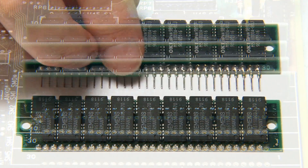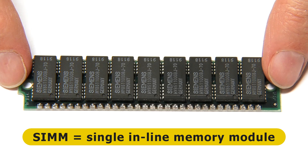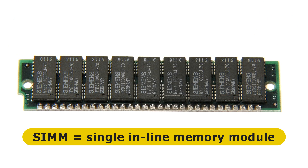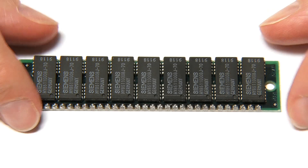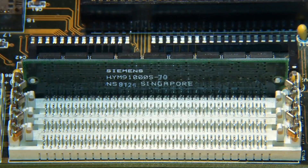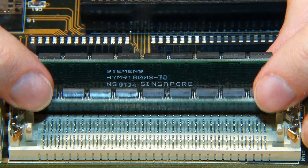For this reason, SIMs, or single-inline memory modules, became a dominant RAM technology. Like SIPs, these were initially available with a 30-pin form factor, although later SIMs had 72 pins. As you can see, SIMs have a robust edge connector and securely clip and lock into a motherboard RAM socket.